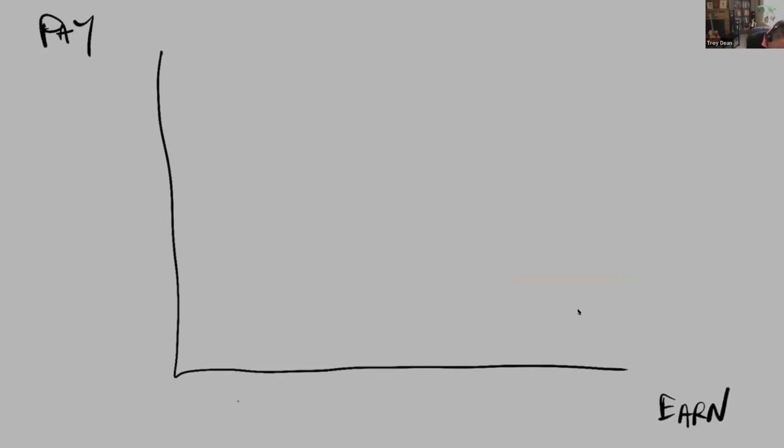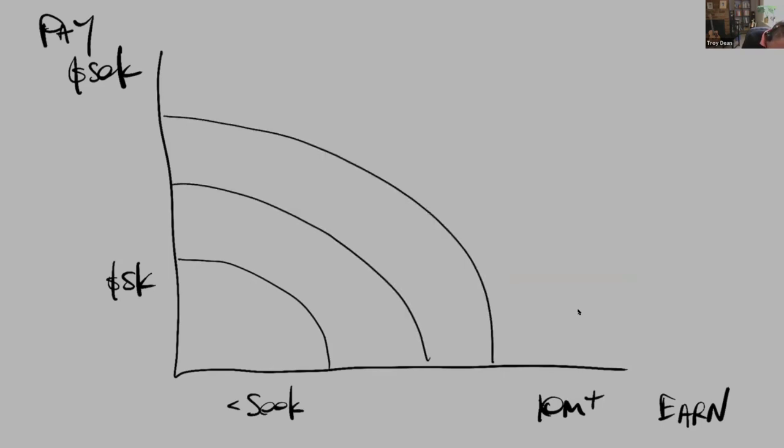So if a client is earning less than $500,000 a year, they'll probably pay $5,000 for a website. If they're earning $10 million a year, well, if you're not quoting them at least $50,000 for a website, they'll laugh you out of the room. Now, let's just imagine there are some different brackets of the market here.